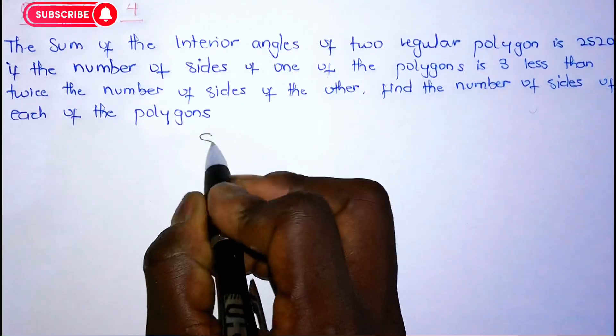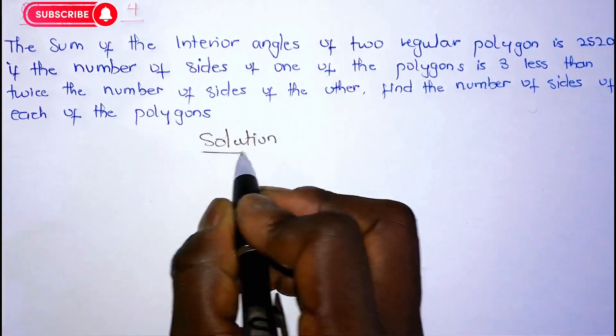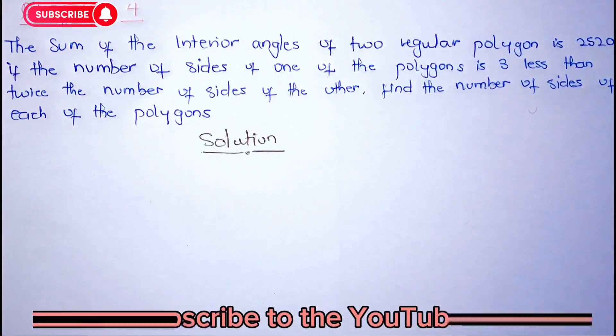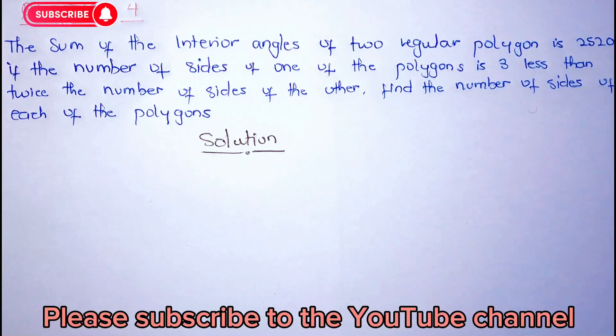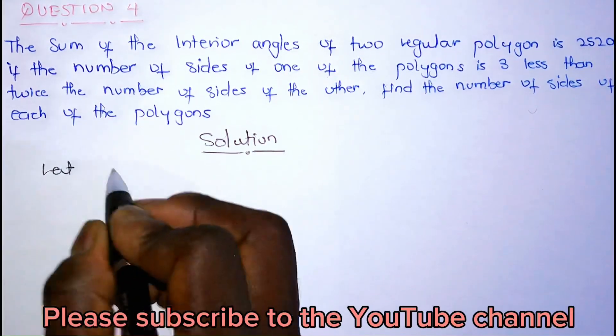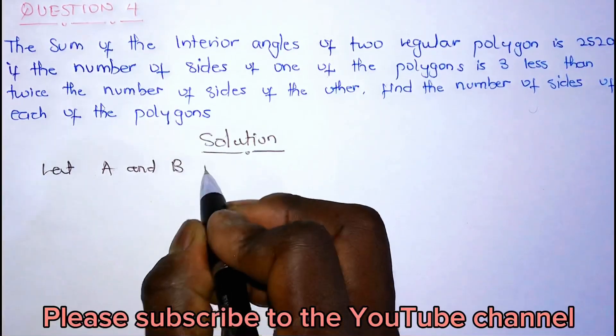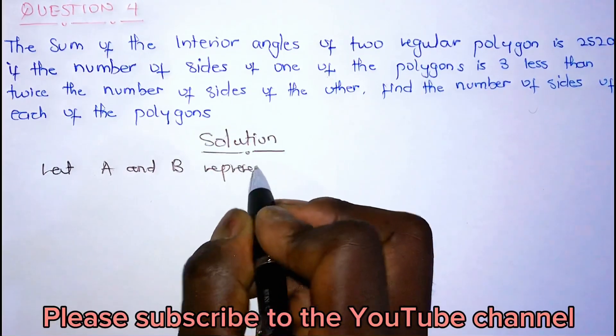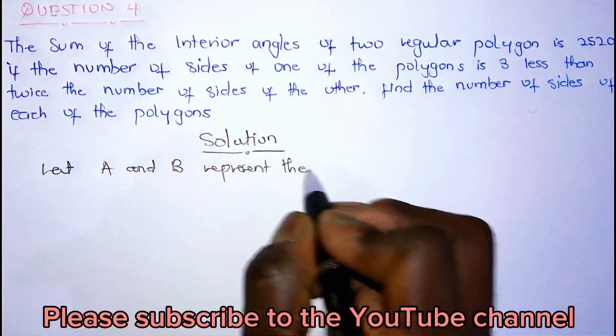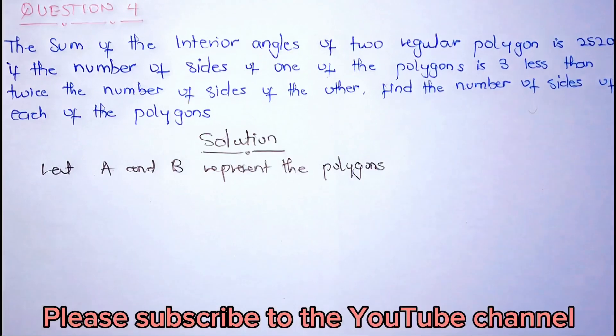Okay, so solution. We don't know the polygons, so let's let A and B represent the polygons. So A and B should represent the polygons.